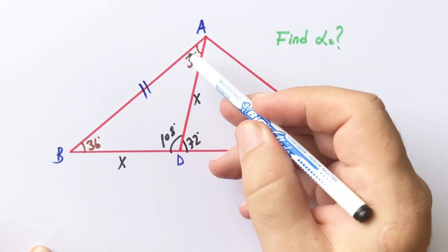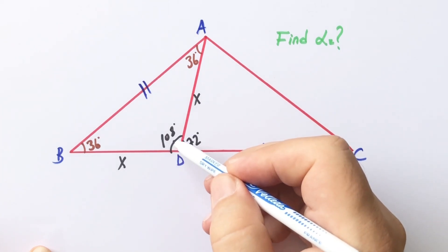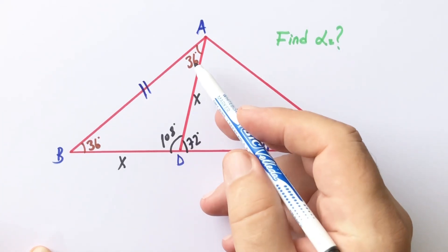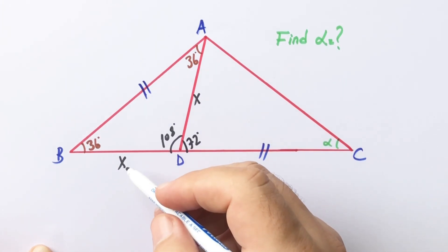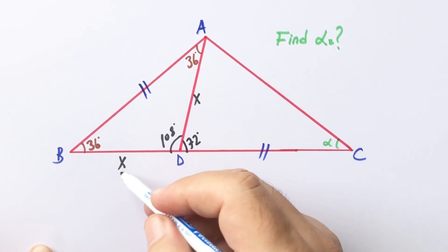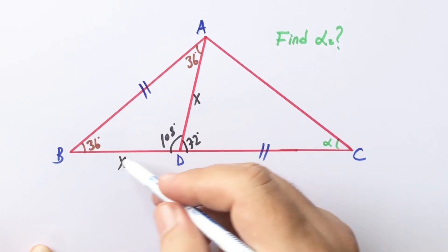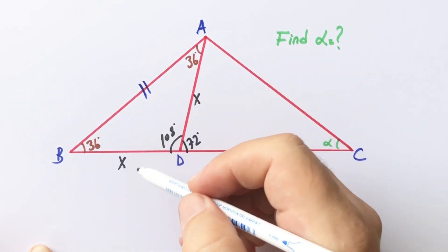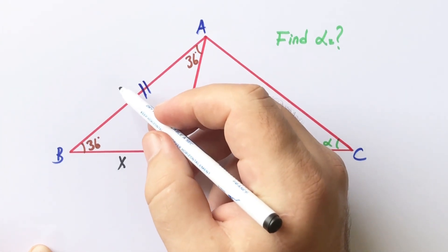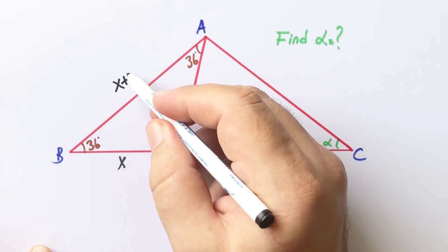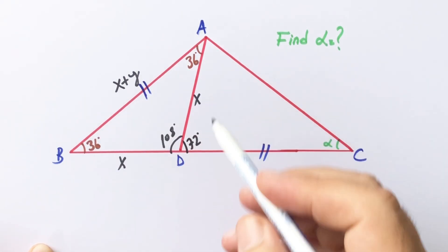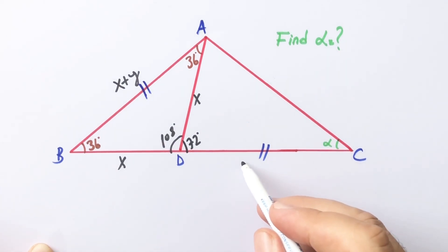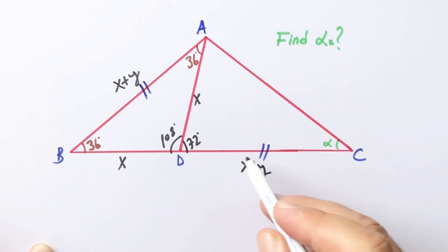This side must be bigger than these two sides because the 108° angle is bigger than the other two angles. Therefore, if there is x units here, this side must be bigger than x, so let's call it x plus y. And because the triangle is isosceles, this side is also x plus y.